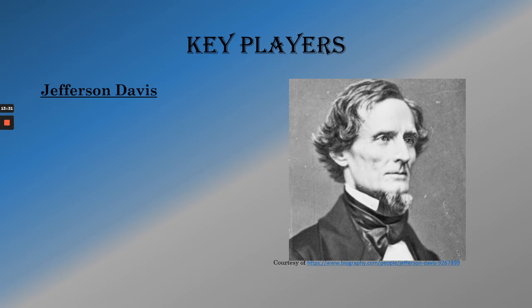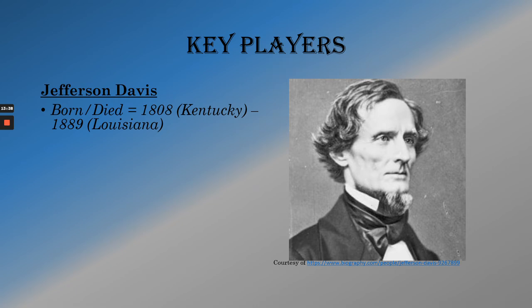Now let's talk about the Confederacy. This is Jefferson Davis — we've talked about him already. He was also, like Lincoln, born in Kentucky, so both presidents on both sides were actually born in the same state. Kentucky is a border state, so you had slavery there but it didn't leave the Union. Interestingly, both Grant and Lincoln married wives whose families had owned slaves or actually owned slaves during their marriage, even though both men were against slavery — a weird mix.